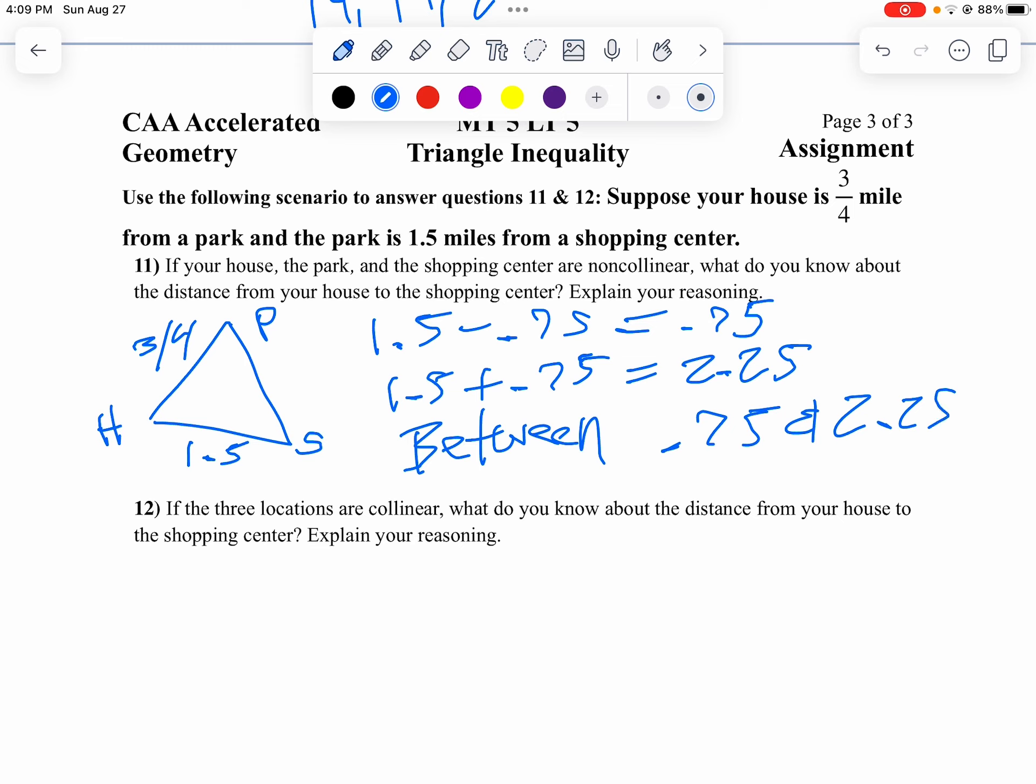Now, if they are in a straight line, it all depends where the shopping center is. If it's between the house and the park, it would be exactly 0.75 miles away. And if it's on the other side of the park, it goes house, park, then shopping center, it would be 2.25 miles.